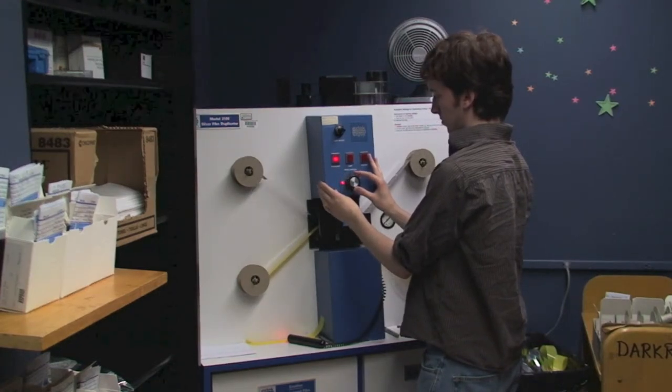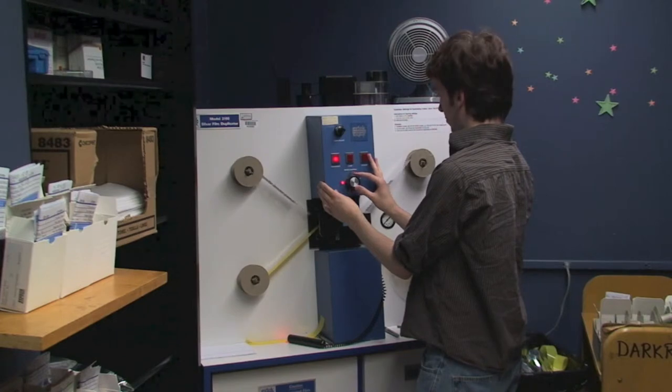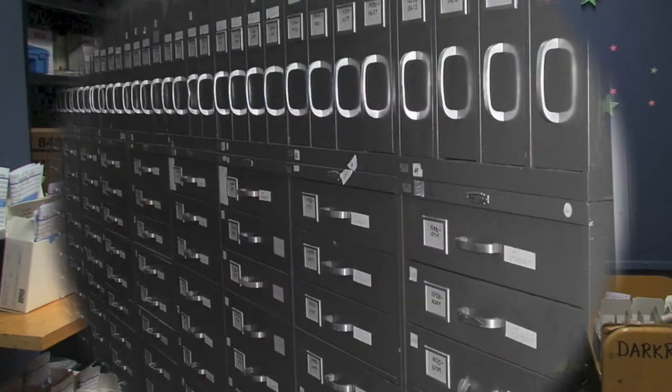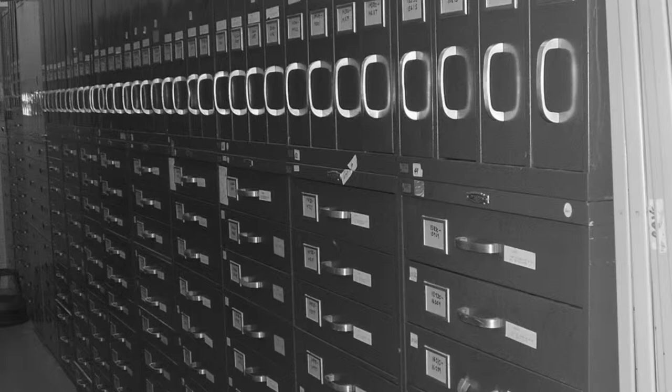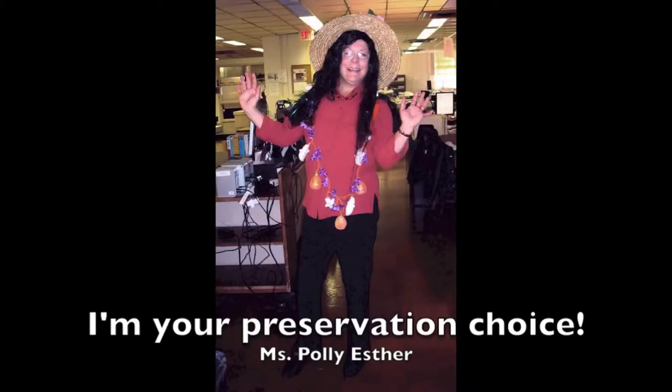And because it's strong and stable, polyester is much more flexible than acetate, so it can meet the challenges of mass duplication and use over time. Under the right storage conditions, it has a life expectancy of 500 years. Hence, polyester is the preservation choice. Did I mention the life expectancy is 500 years?